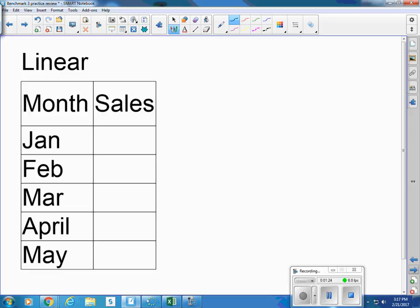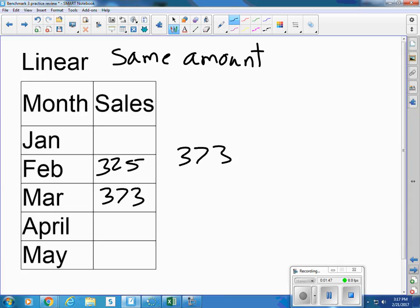So for a linear model, linear equations change by the same amount. And in this case, we're talking about amount per month. So we know that February was 325, March is 373. So if I want to know the amount of the increase, I say 373 minus the 325. That tells me that the increase is 48.